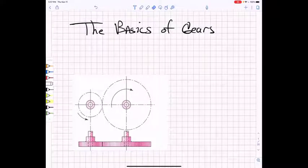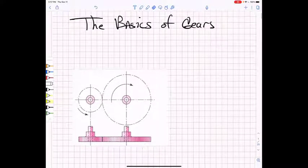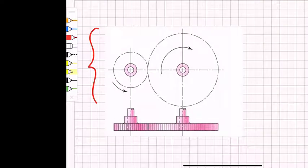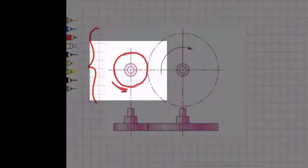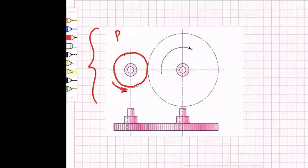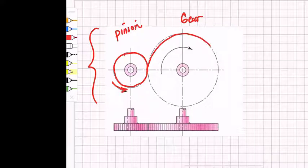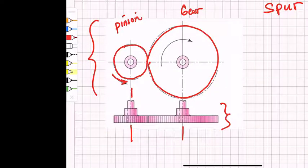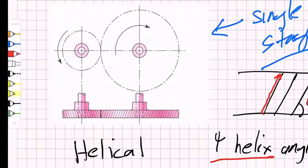We'll start with the basics of different gear types. This figure from the Shigley textbook shows two parallel axes with a small gear on the left — the pinion — rotating counterclockwise, and the gear on the right rotating clockwise. These are spur gears because they have straight-cut teeth that are cut parallel to the axis of rotation.